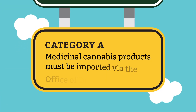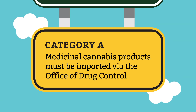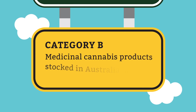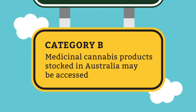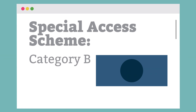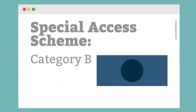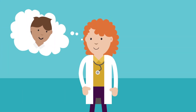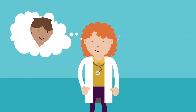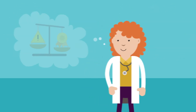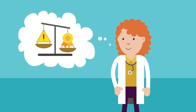Category A requires you to import a product for your patient via the Office of Drug Control, or ODC. Under Category B, you can usually access stocks of domestic or imported products that the ODC has already allowed into Australia. If you apply for access to an unapproved medicinal cannabis product under SAS Category B, you must provide a clinical justification. You will need to outline your patient's condition and their treatment history, including whether you have considered relevant approved products. The clinical benefit must be balanced against the potential risks.